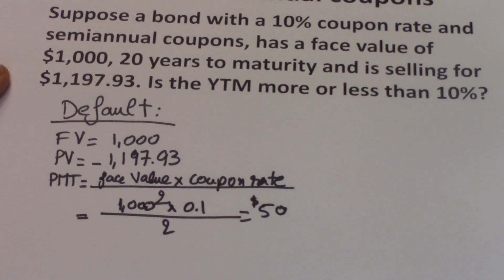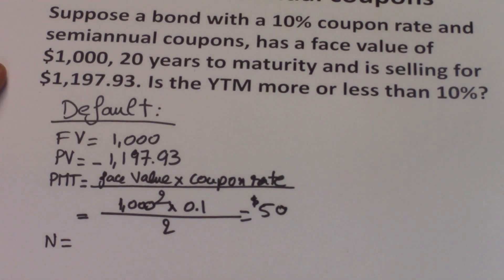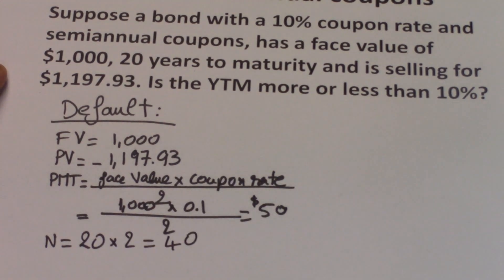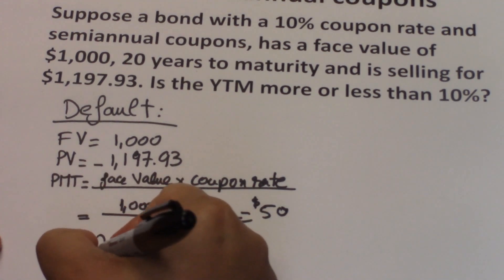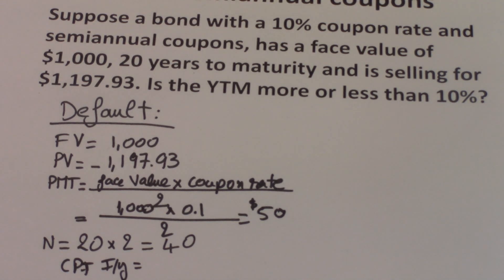Now we need to determine N — how often you receive the $50 payment. We have 20 years to maturity, but since you're paid twice each year, N = 20 × 2 = 40. Now you're ready to compute I/Y. Note that since the payment and N are both semi-annual numbers, the I/Y output will also be a semi-annual number. When asked for yield to maturity, you need an annual number, so you'll need to convert the output.